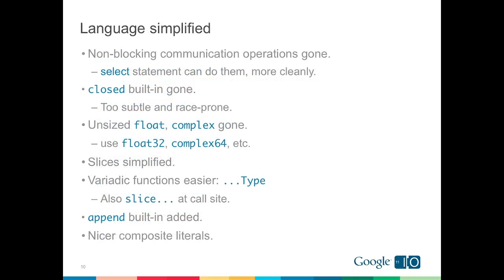In the past year, the language has simplified. Unlike some other languages, we'd like to keep Go really clean and simple. We've actually removed some things from the language to make it better. Non-blocking communication operations went away because they were confusing semantically — the select statement provides all you need there anyway. We got rid of the closed built-in because people misused it. We clarified type sizes for floats and complexes, making math libraries nicer. Slices got simpler, the variadic dot-dot-dot syntax got nicer, and we added an append built-in which clarified a lot of code. Composite literals got easier to type.